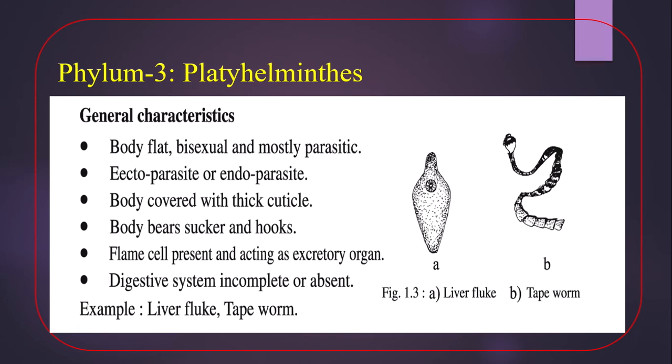They are mostly parasitic — they depend on another animal for food and nutrition. They can be ectoparasitic, meaning they live on the outside of the host body, or endoparasitic, meaning they live inside the host body. The body is covered with a thick cuticle, and the body bears suckers and hooks. A special type of cell called a flame cell is present and acts as the excretory organ, since the excretory system is not well developed.